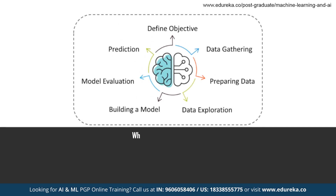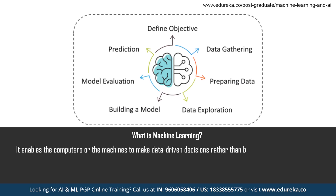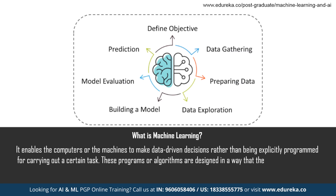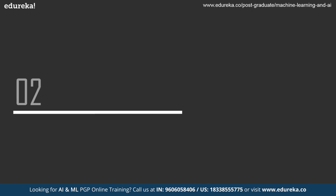Machine learning is a concept which allows machines to learn from examples and experiences without being explicitly programmed. Instead of writing the code yourself, you feed data to a generic algorithm and the algorithm or machine builds the logic based on the given data. Machine learning algorithms are an evolution of normal algorithms and they make your program smarter by allowing it to automatically learn from the data you provide.